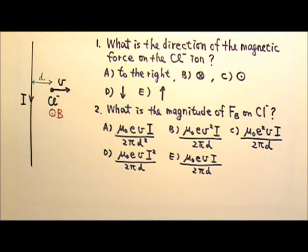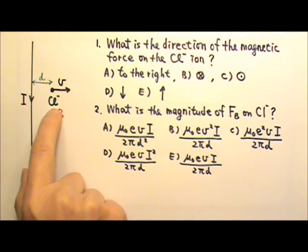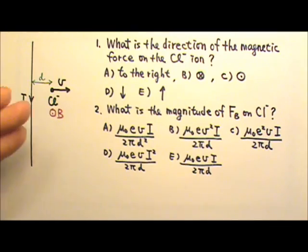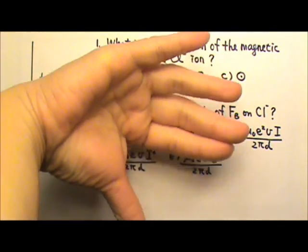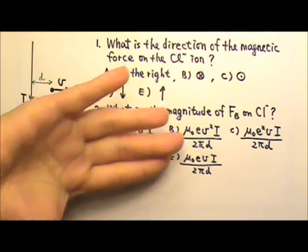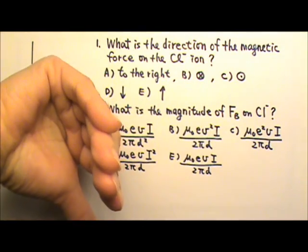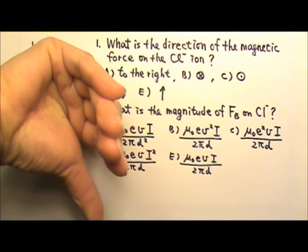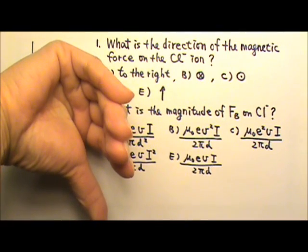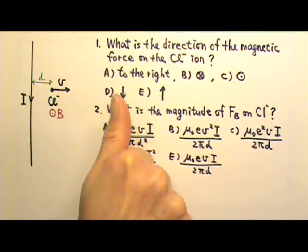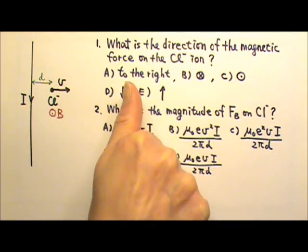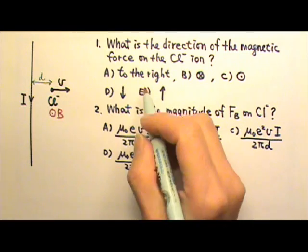So to find the direction of the magnetic force acting on this chloride ion, I can use my right hand rule. I do V cross B. The V goes to the right, B comes out of the paper. But because this ion is a negative charge, I have to remember to flip my thumb, so the direction of the force goes up that way. So the answer is E.